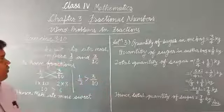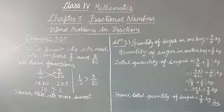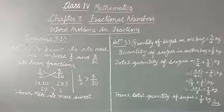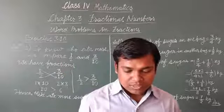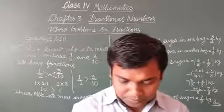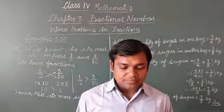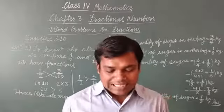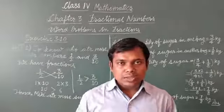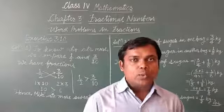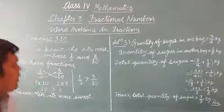In this way you have to solve the questions. I hope you understood these two solutions. Now I am going to solve one more question from this exercise. The question is question number 7. It is given that a book weighs 1/3 kg — what is the weight of 8 such books? To get the weight of 8 books, we will multiply the weight of 1 book by 8.